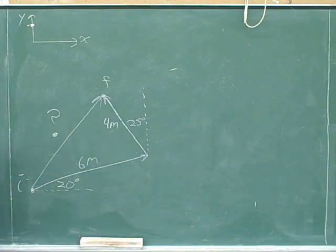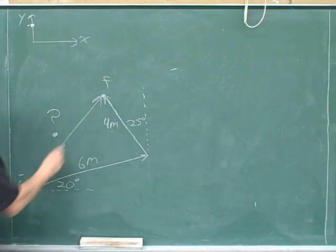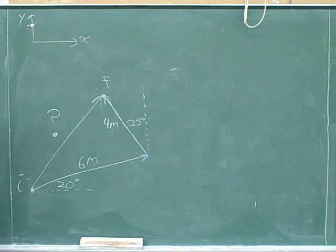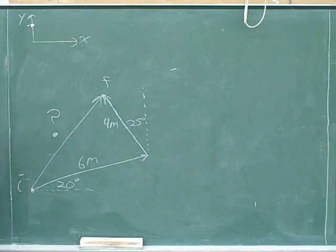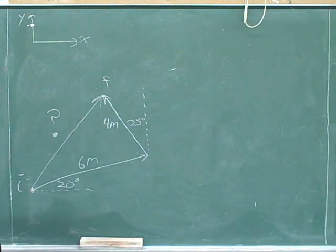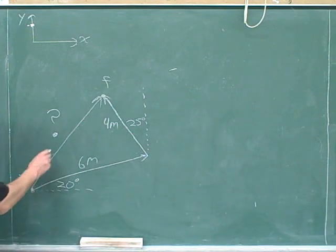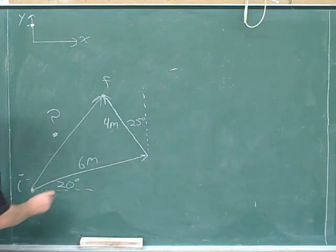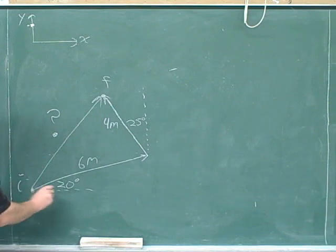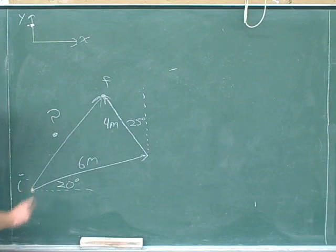We're trying to figure out the overall resultant displacement vector — the vector that shows how far we've gone from the initial point to the ultimate final point. We want to know how long it is, and it would also be nice to know what direction it's pointing. Clearly, the overall displacement vector is not just pointing at a 20-degree angle, so we're going to have to use some skills to figure that out.